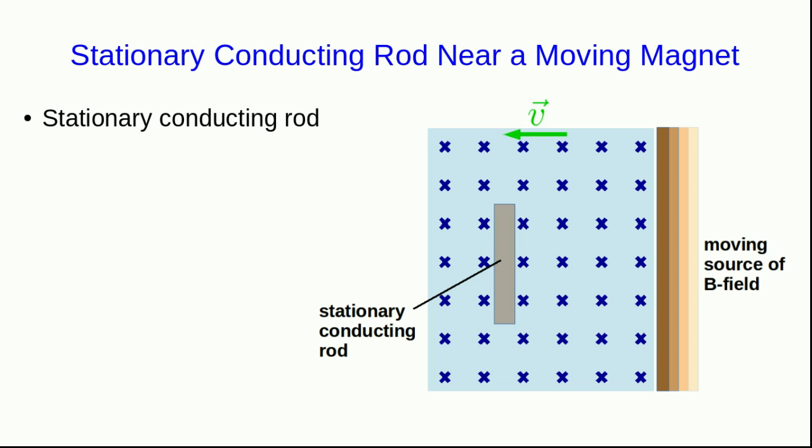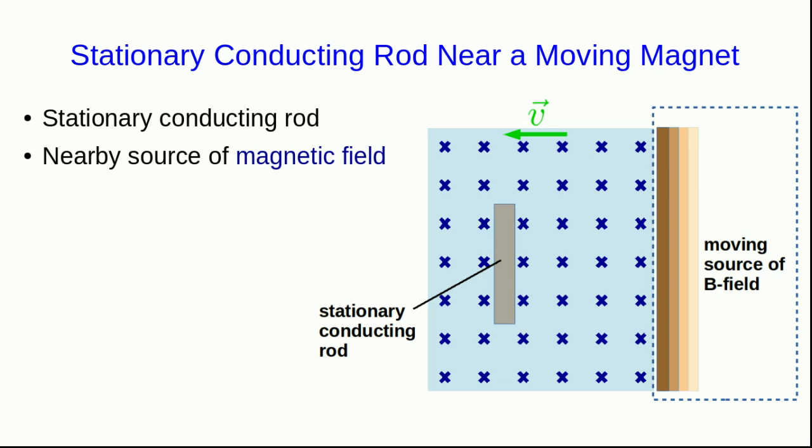So let's think about a stationary conducting rod, and it is near to a source of magnetic field. That source could be anything. It could be a permanent magnet, a coil, or a solenoid, and so I'm just representing it as a generic thing here.